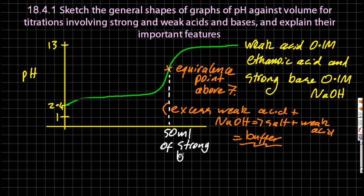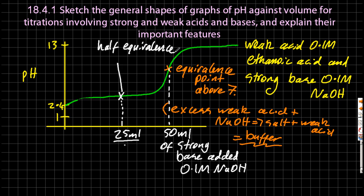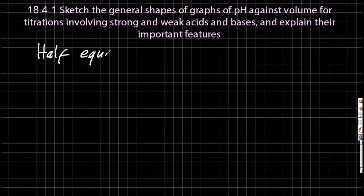So reading down to the x-axis, I've got, let's say, 50 milliliters of the strong base was added there. And half of 50 is 25, and the point there is the half equivalence point. And if you read all the way across to the pH axis, the pH there is equal to the pKa of the acid.